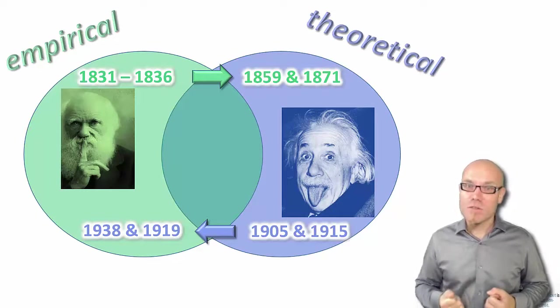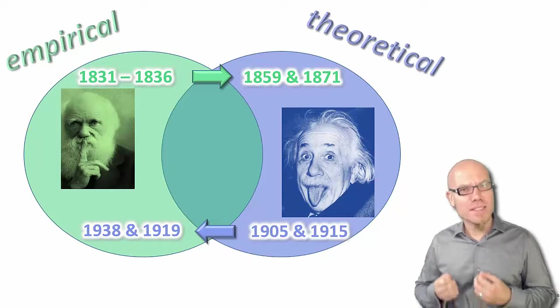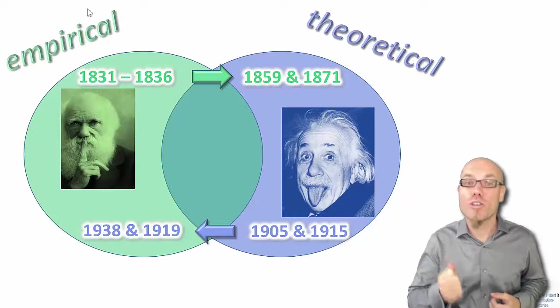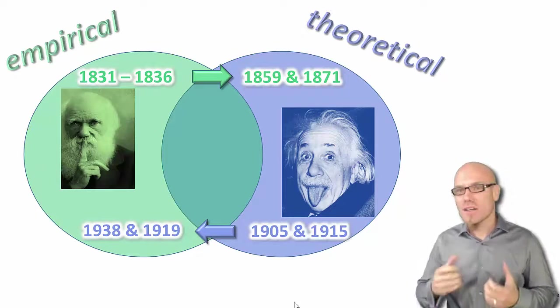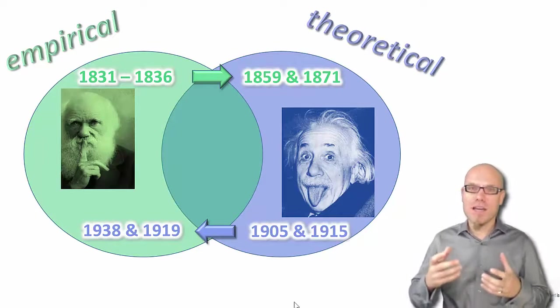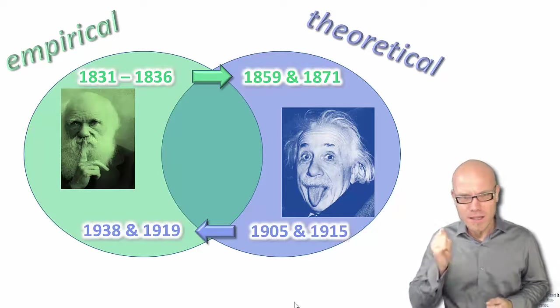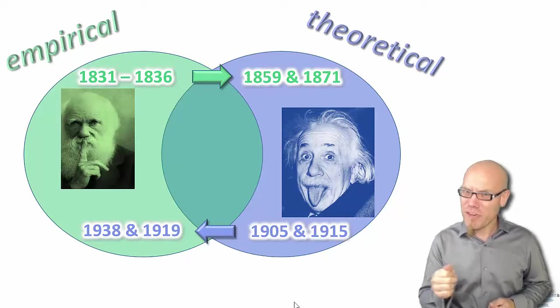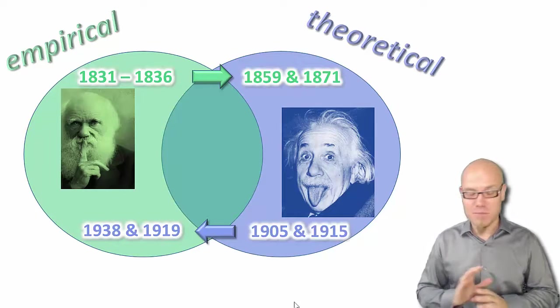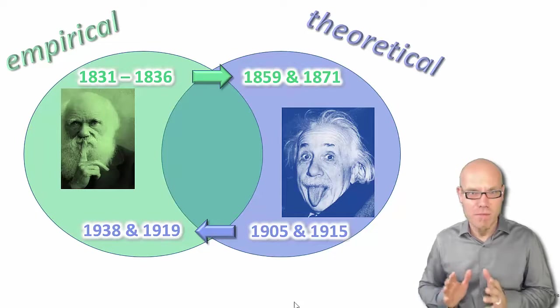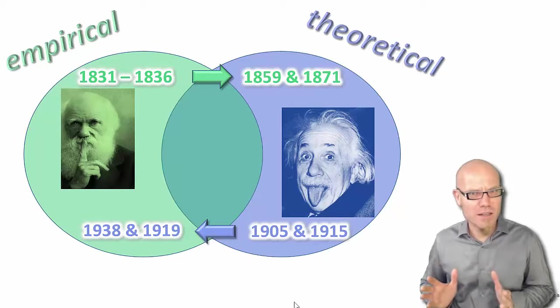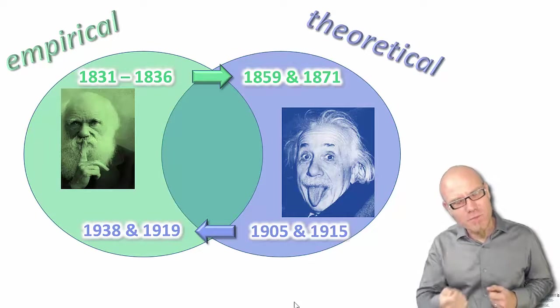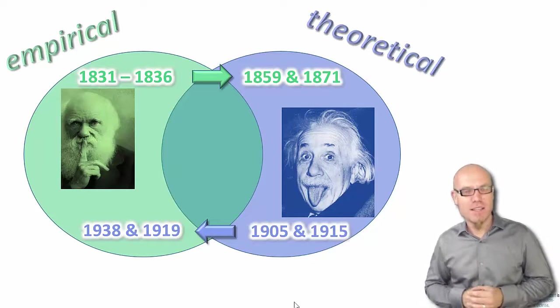Now it only becomes science once we also test it. Once we test this theory empirically, and Einstein himself made suggestions on how to test it. So he was a real scientist. He was not only saying, well, I might imagine this is a beautiful thing. No, he said, well, this is my theory and test it these three ways. If any of them fails, the theory must be completely wrong. Forget about my theory and forget about me. It's completely wrong. So he also shaped his theory so it could be tested.